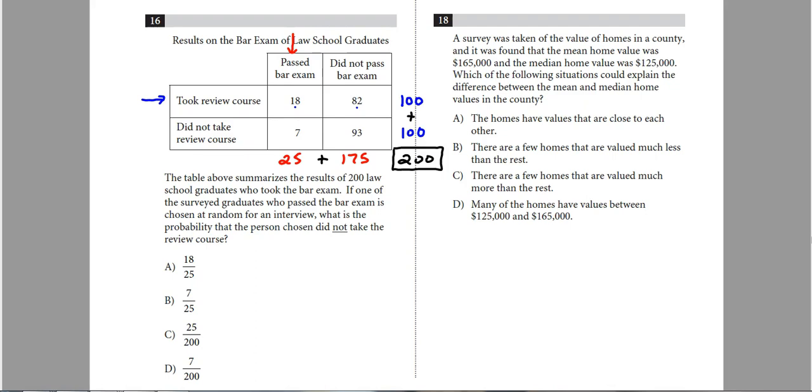Now if you have your numbers right, it's always good to check. You should be able to add both coming horizontally and vertically and get the same number. So there were 200 people that we had the results for here. So let's go through and see what they're looking for. If one of the survey graduates who passed the bar exam is chosen at random, so that's huge. One of the graduates who passed the bar exam is chosen at random, well, we always put that number on the bottom, how many we're choosing from, and people who passed the bar exam, there was 25 people. So if I choose one of those 25 people at random, what is the chance that the person did not take the review course?